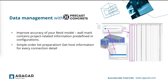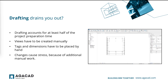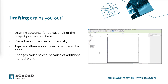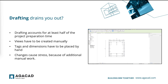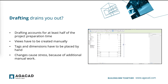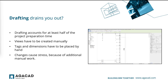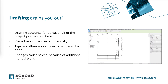We have already talked about modeling and data management. Now let's proceed with documentation. Detailing building design requires many hours of work, especially for structural projects that require a high level of detail. Preparing shop drawings often accounts for at least half the total project preparation time. Revit users spend lots of time on manual tasks like dimensioning, tagging, and placing views on sheets — automating documentation has always been a critical need for the construction industry.